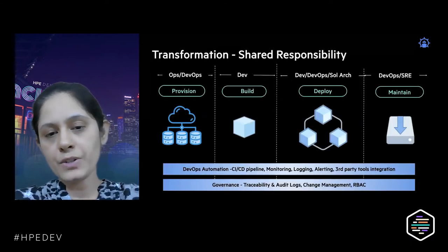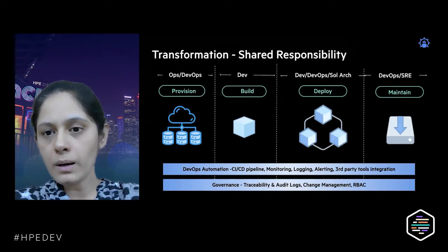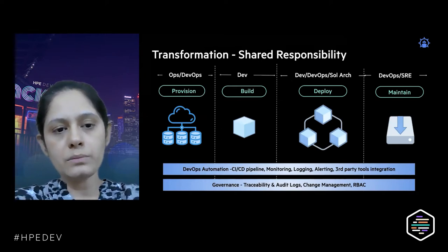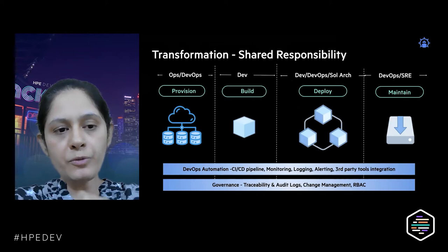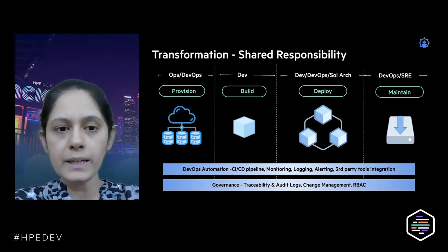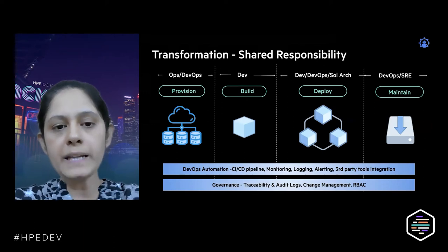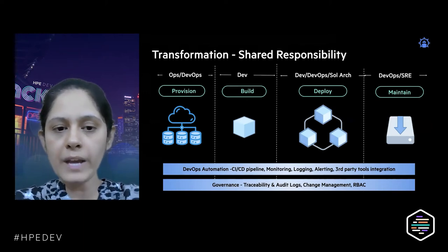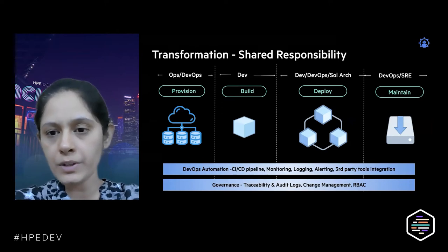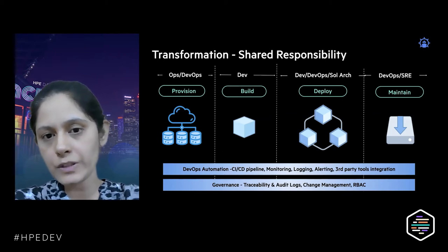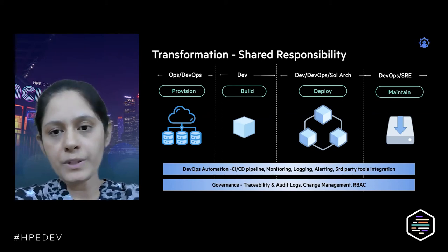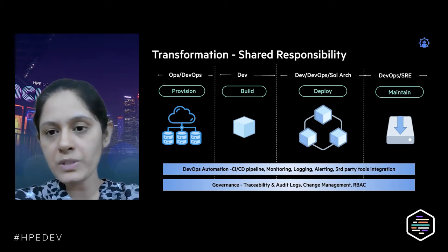The whole transformation is a shared responsibility across multiple stakeholders. From provisioning environments, DevOps or Ops teams are involved. When building the application, developers are involved. When stitching multiple services together and building a composite architecture and complete deployment architecture, developers, solution architects, and sometimes DevOps teams are involved.